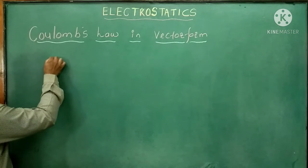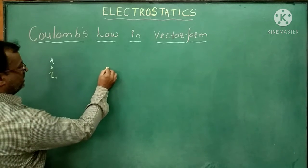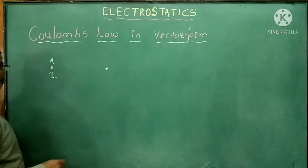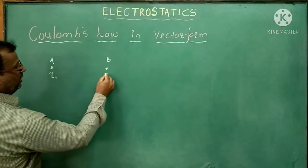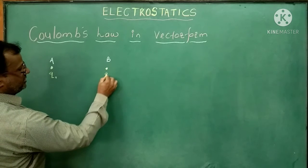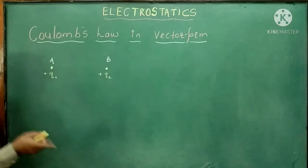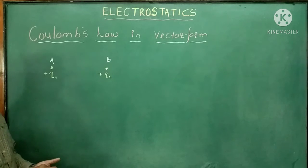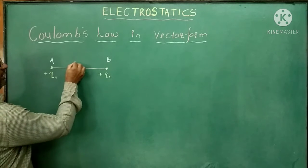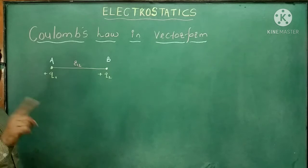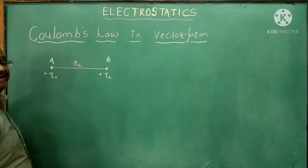The first charge Q1 is placed at point A. The second electrical charge Q2 is placed at point B. Both charges are positive, and they are separated by a distance R12, where R12 represents the distance between the first and second electrical charge.